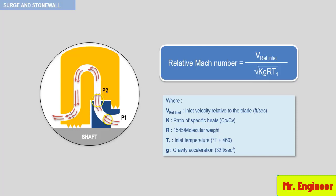The sonic velocity, as you can see here, is directly proportional to K, the ratio of specific heats, and to the inlet temperature, and is inversely proportional to the gas molecular weight.